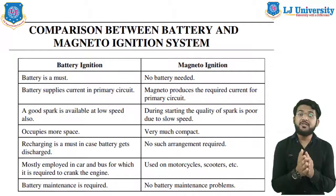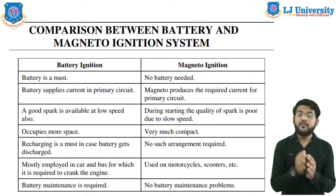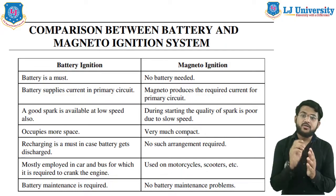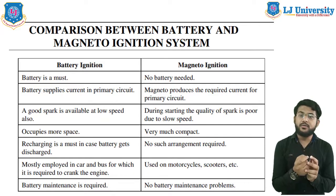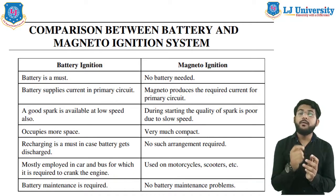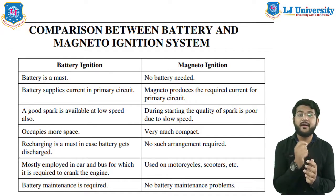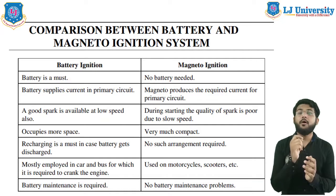Conventional ignition systems are of two types: first is battery or coil ignition system, and second is magneto ignition system. Both are conventional methods and ignition systems work on the mutual electromagnetic induction principle.